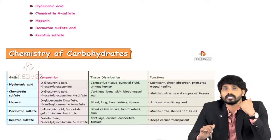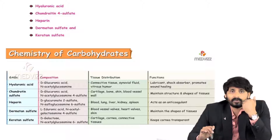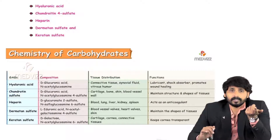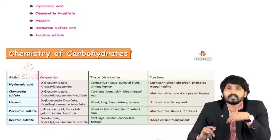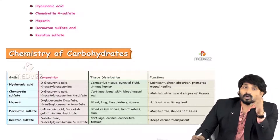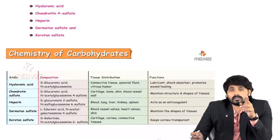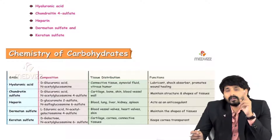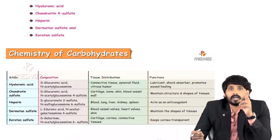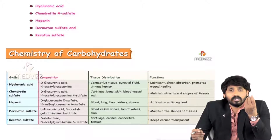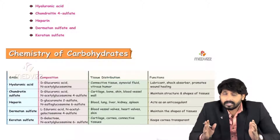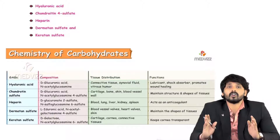Next, coming to chondroitin sulfate. Its composition is glucuronic acid plus N-acetylglucosamine 4-sulfate. The amino group is acetylated at the second carbon of glucose and the sulfate group is at the fourth carbon. It is present in cartilage, bone, skin, and blood vessels. The main function is to maintain the structure and shape of tissues.